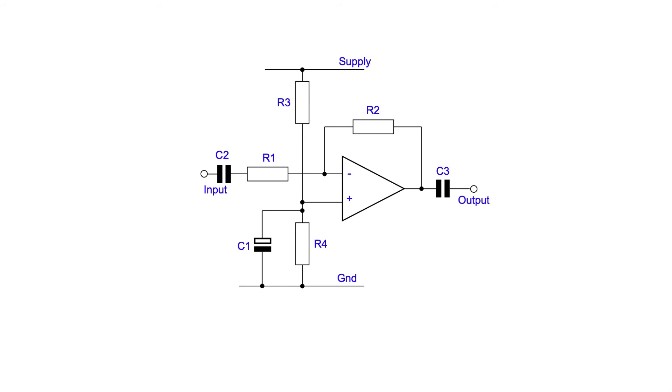As the input and output will be sitting at half the supply voltage you'll need to arrange input and output capacitors. It's necessary to think of the low frequency cutoff point. The low frequency breakpoint occurs when the reactance of C2 is the same as the resistance of R1.